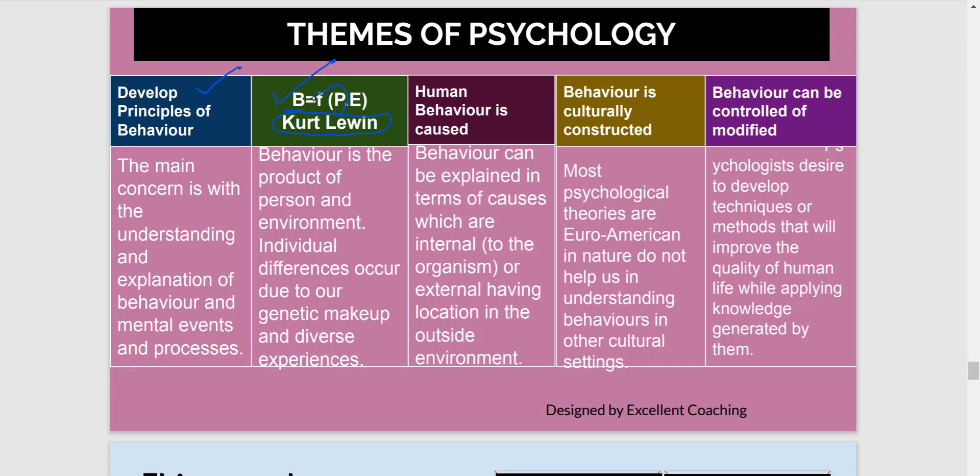Whatever environment we are in — our culture, social environment, values and beliefs — all of these shape our behavior. We cannot study behavior in isolation without knowing the context of the person and where that person is being developed. Person and environment are both important because that is what makes us different from each other. Biologically we are all the same, but our behavior is very different, and individual differences occur due to our genetic makeup as well as our diverse experiences caused by the environment.